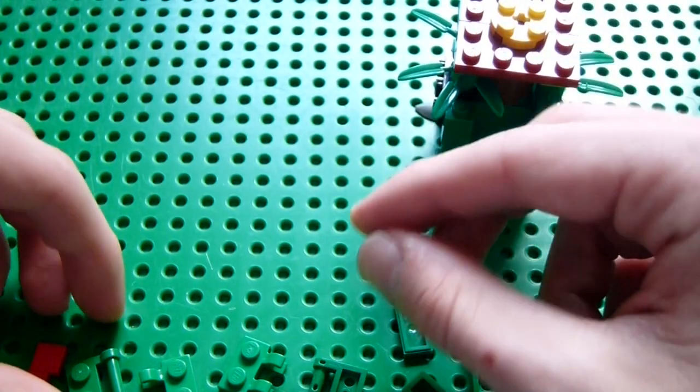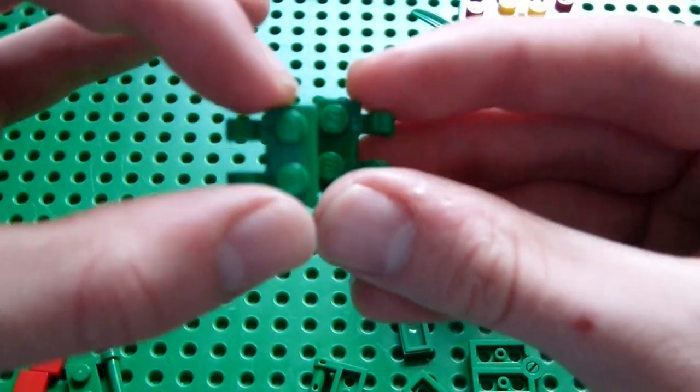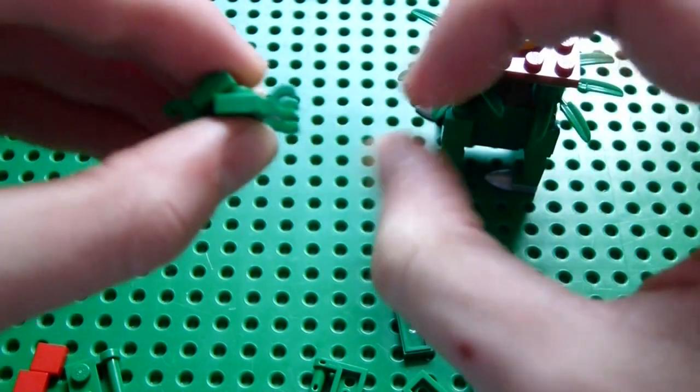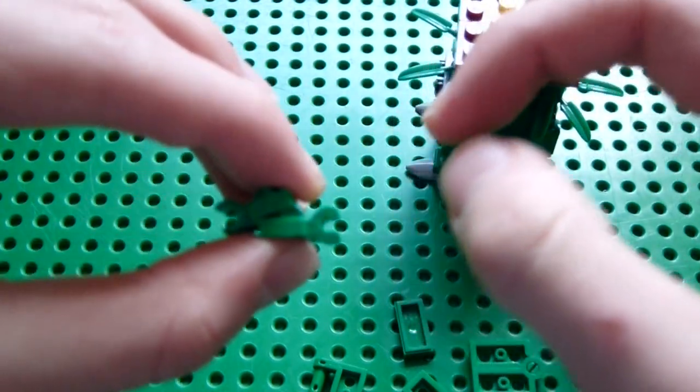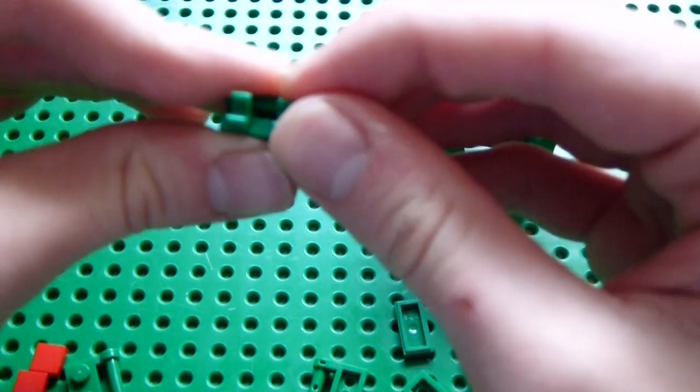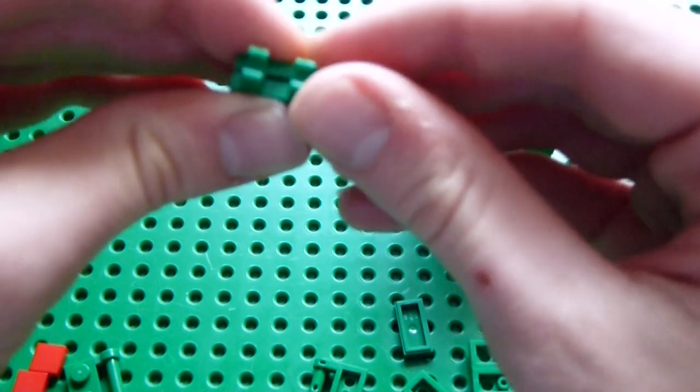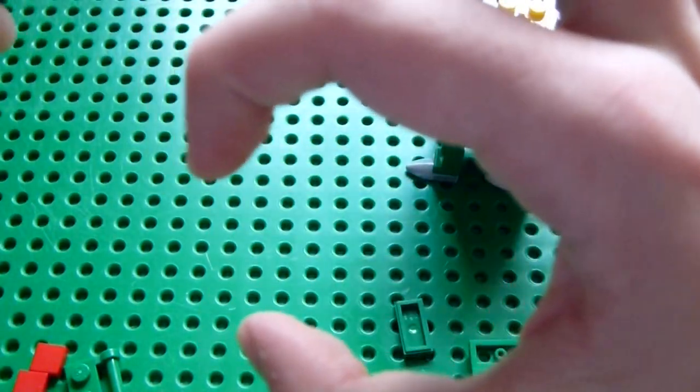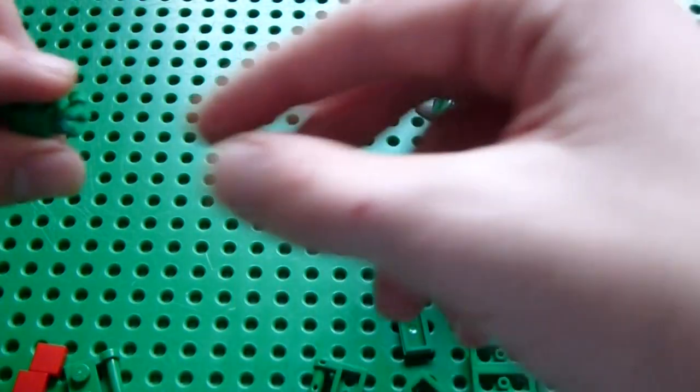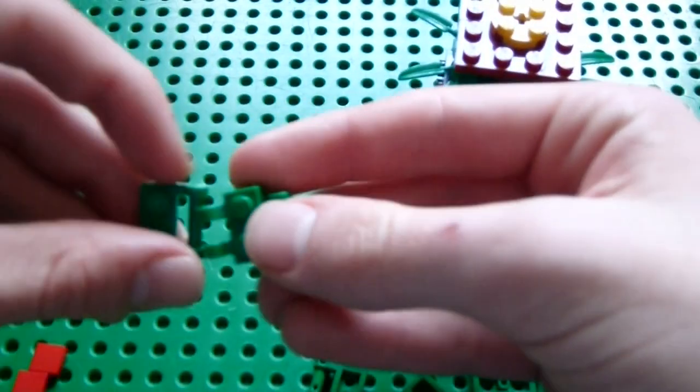As for the head, take two of these double claw pieces. The ones that are the vertical claws, like grab. The claws like this. Not like this, like this. And place them on top of each other.